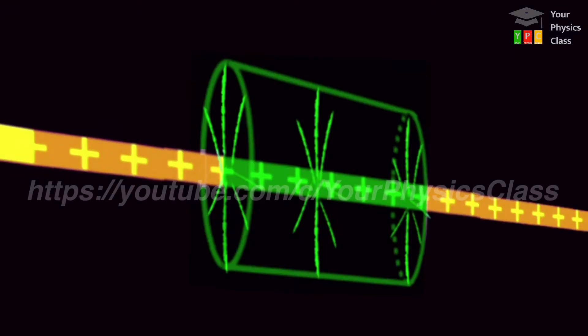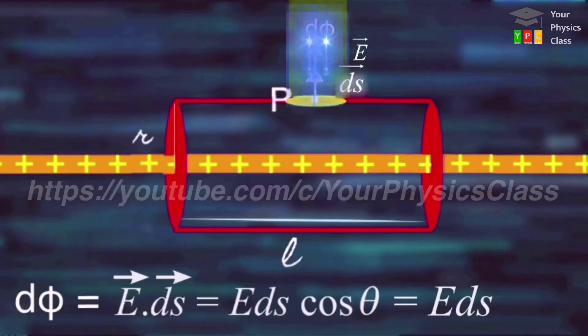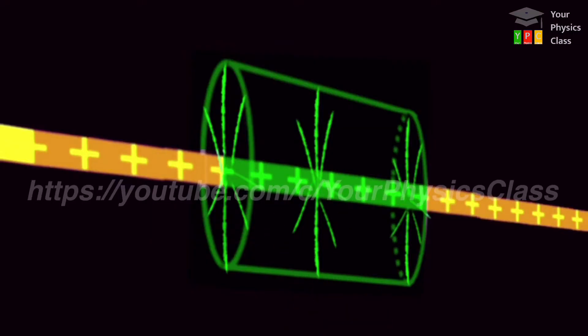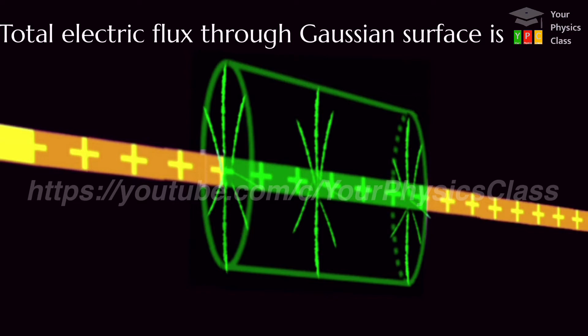Now, net flux through gaussian surface is obtained by integrating this flux d phi over the gaussian surface. So total electric flux through the gaussian surface is given by phi equal to integration E ds.